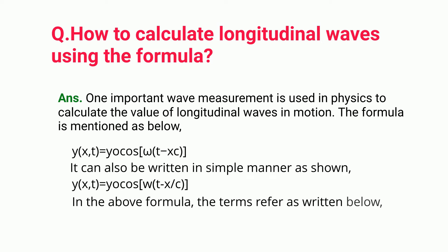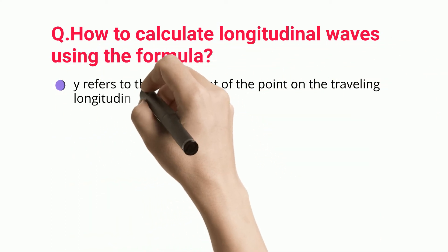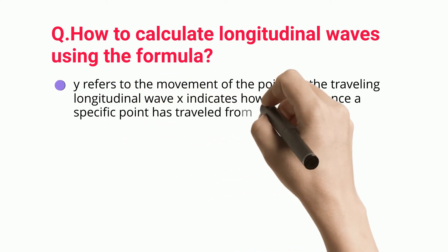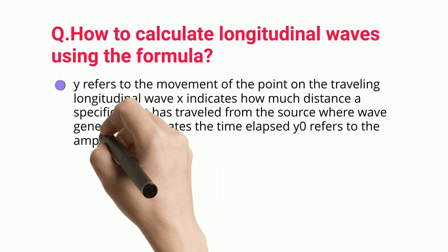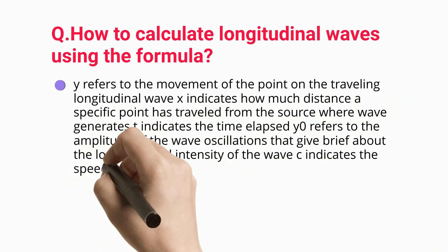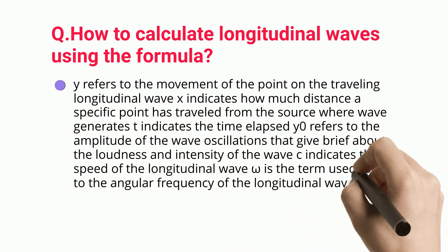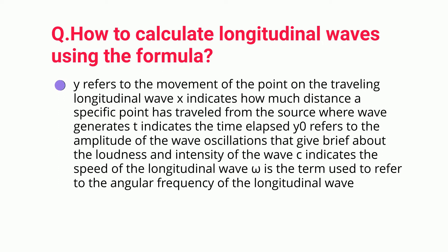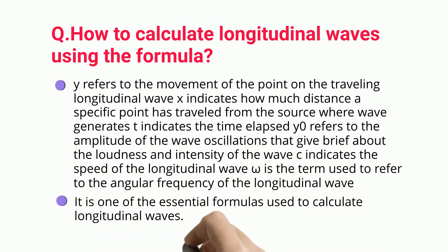In the above formula, the terms are defined as follows: Y refers to the movement of the point on the traveling longitudinal wave. X indicates how much distance a specific point has traveled from the source where the wave generates. T indicates the time elapsed. Y₀ refers to the amplitude of the wave oscillations, which gives information about the loudness and intensity of the wave. C indicates the speed of the longitudinal wave. ω is the term used to refer to the angular frequency of the longitudinal wave. It is one of the essential formulas used to calculate longitudinal waves.